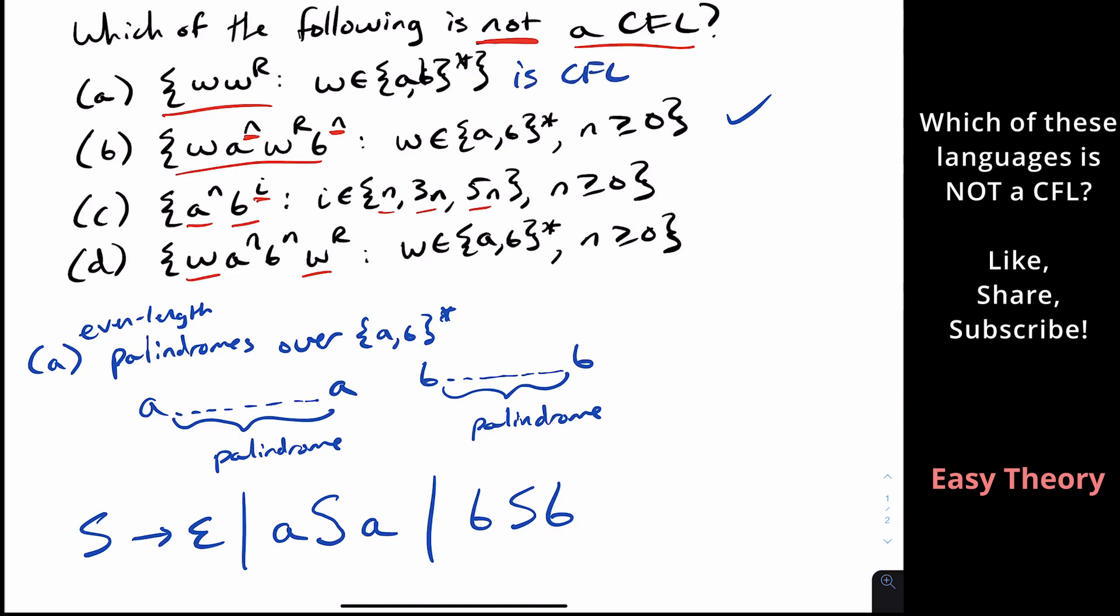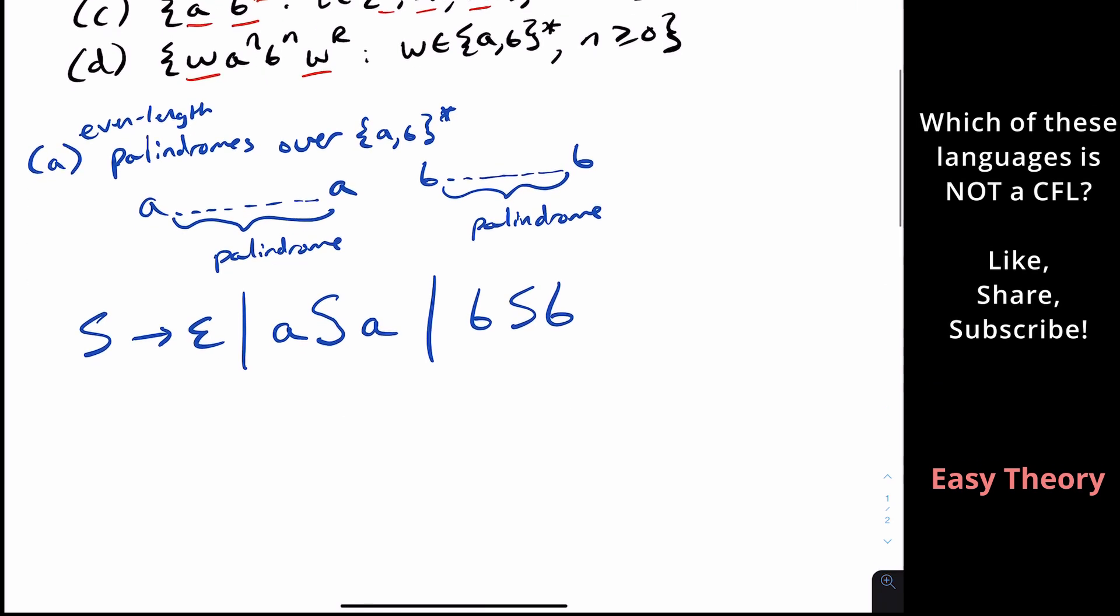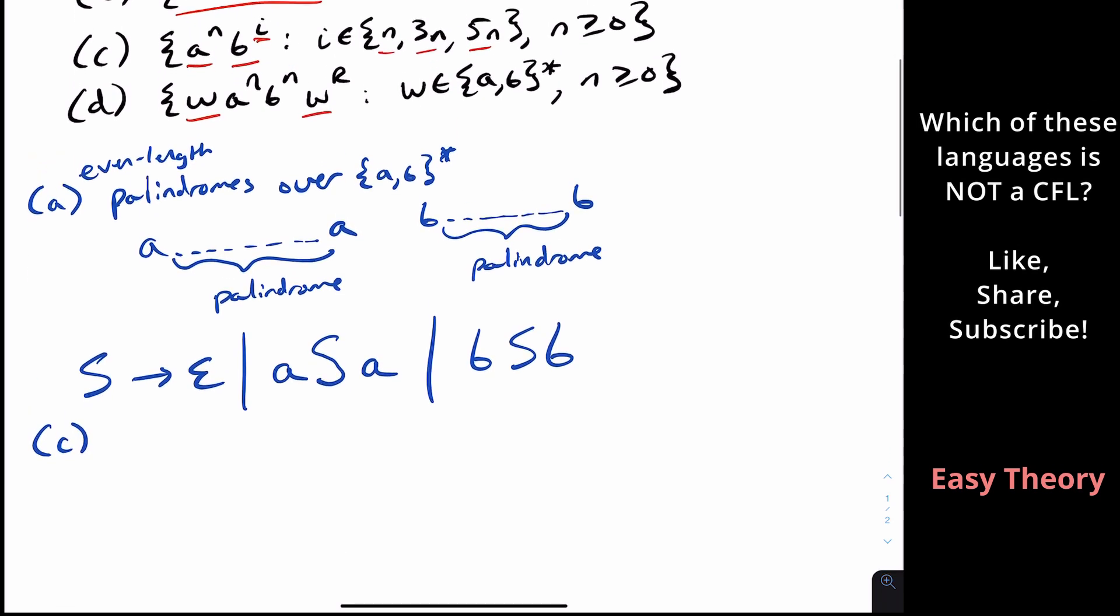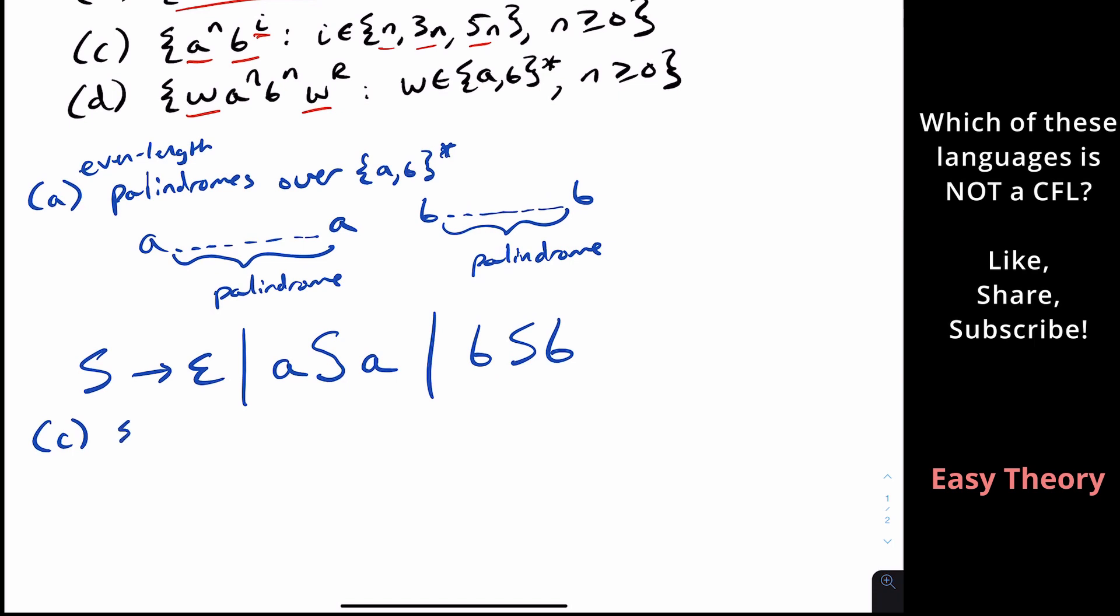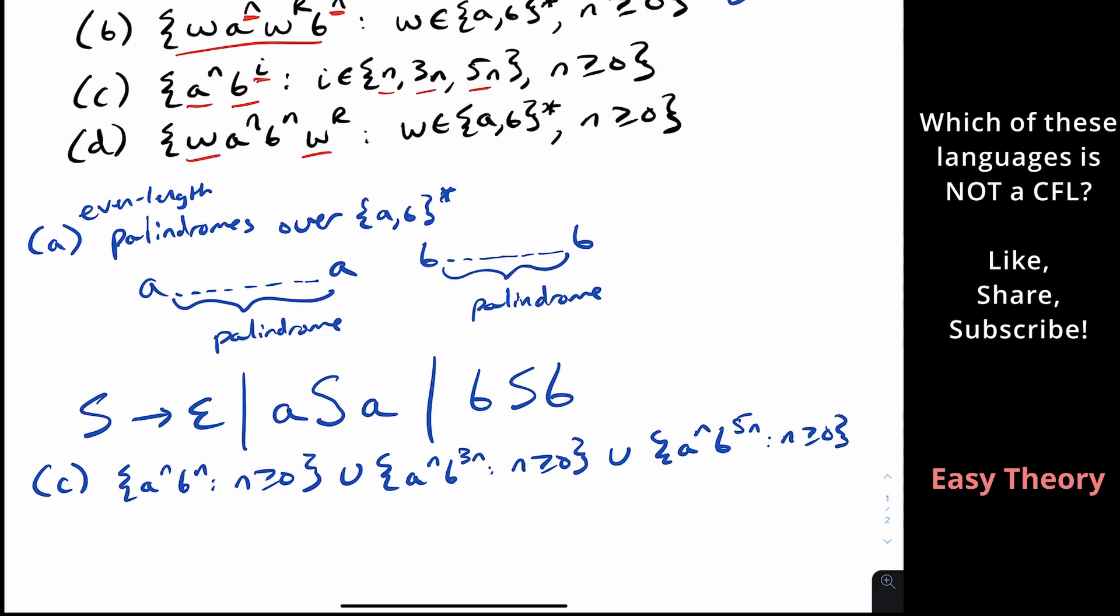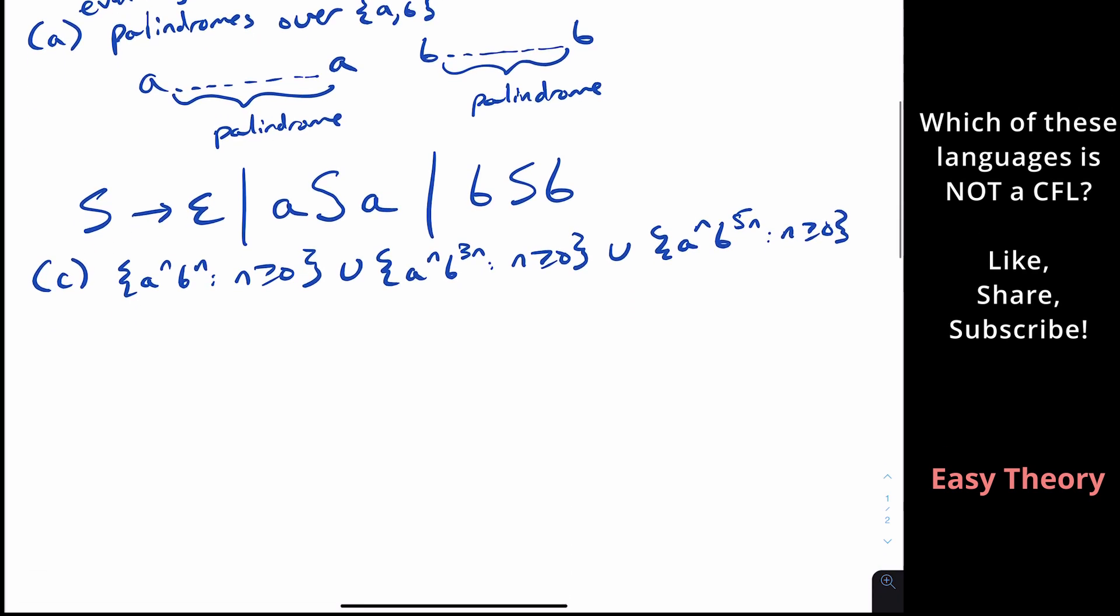So let's skip over B for now. Let's go to C. So why is C context-free? Well, it's the same thing as A to the N, B to the N, N at least 0, union A to the N, B to the 3N, where N is at least 0, union A to the N, B to the 5N, where N is at least 0. Because I could either be N, 3N, or 5N.